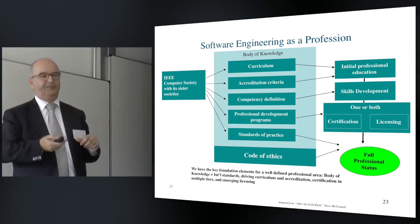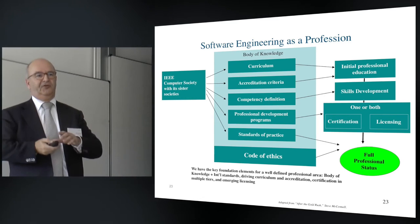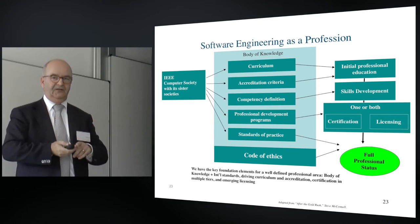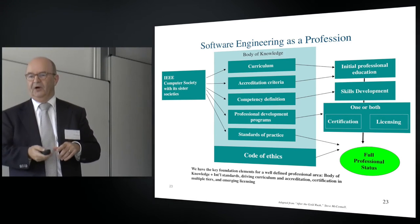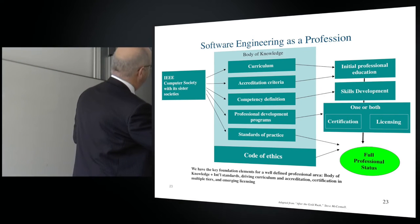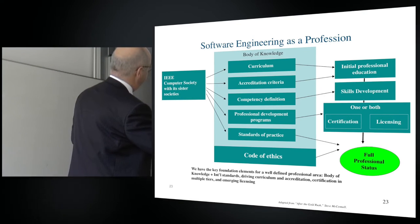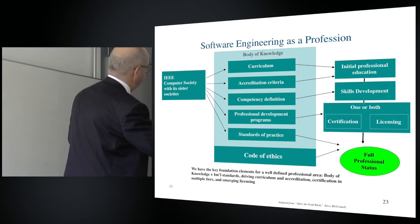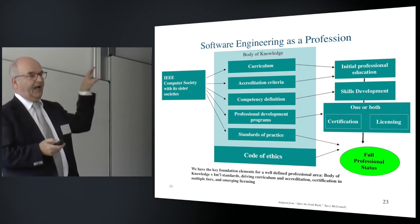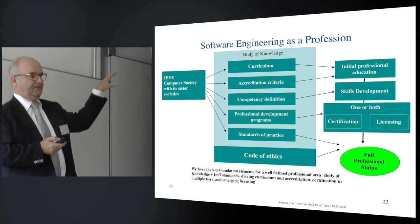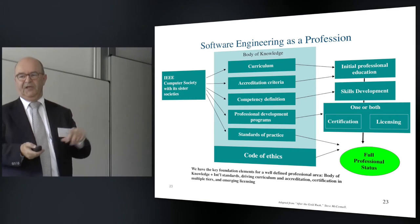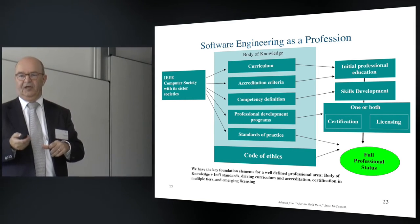They call that a body of knowledge — also very often terminology that causes confusion. What do you mean by body of knowledge? There are discussions about whether we can achieve one or two. Then you go to professional education, skill development, you get a certificate, and then you get a license. All the elements in this picture cover the whole area — full professional status.